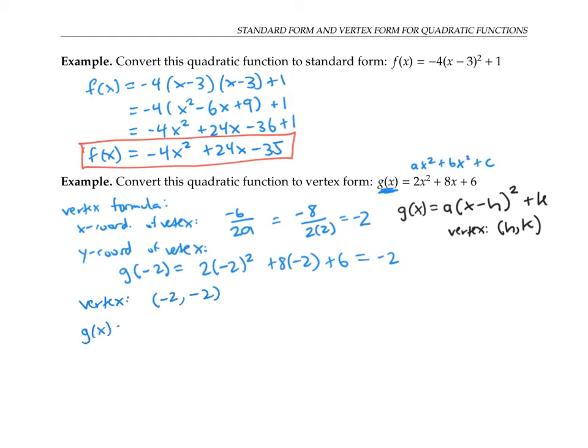And if I want to write g of x in vertex form, it's going to be a times x minus negative two squared plus minus two. That's because remember, we subtract h and we add k. So that simplifies to g of x equals a times x plus two squared minus two.